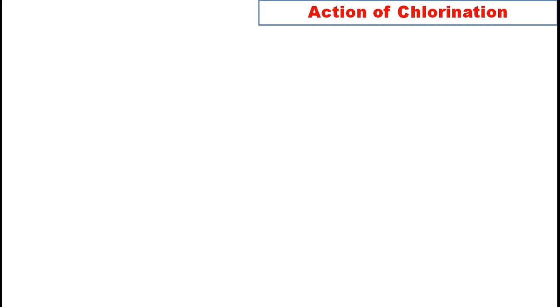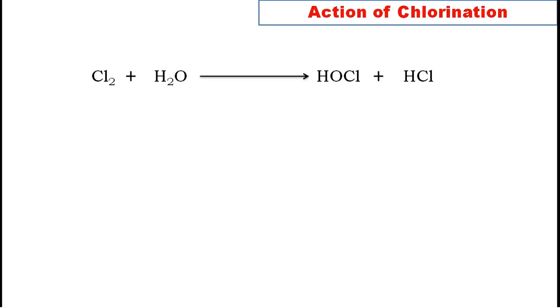Now, the action of chlorination — how the process of chlorination takes place inside the water. We have H₂O (water) and we add chlorine (Cl₂) to the water. The reaction produces HOCl (hypochlorous acid) plus HCl.